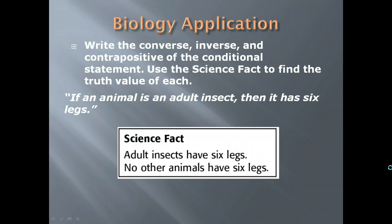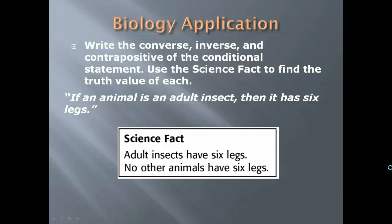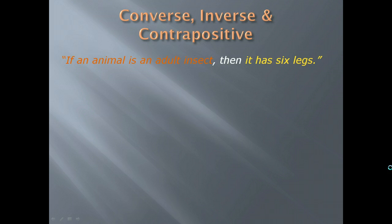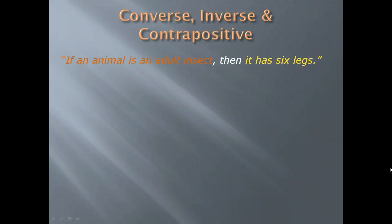Let's write the converse, inverse, and contrapositive of a conditional statement and use a science fact to find the truth value of each. Our statement is: If an animal is an adult insect, then it has six legs. The science fact is: adult insects have six legs, and no other animals have six legs. The hypothesis is 'an animal is an adult insect' and the conclusion is 'it has six legs.'